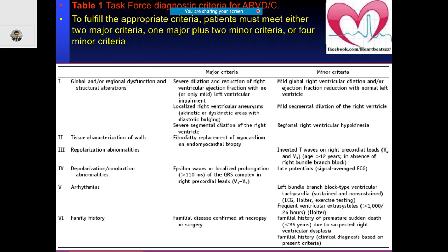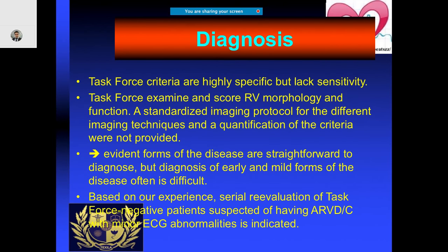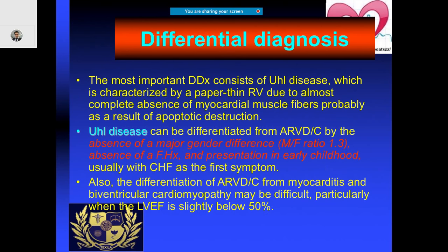There are many minor criteria as well — for example ECG criteria like T-wave inversion, and late potentials typically seen on signal-averaged ECG. For diagnosis, a modification of the task force criteria has been established. Up to 28 percent of patients have been said to have ARVD when all cardiovascular parameters are taken into account. Not all patients will have all symptoms, but if you notice ECG, Holter, or echo parameters, you may suspect familial involvement.